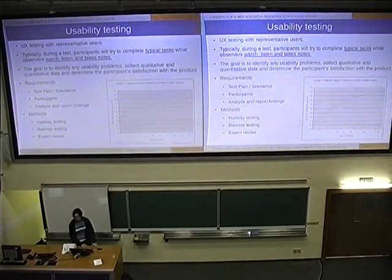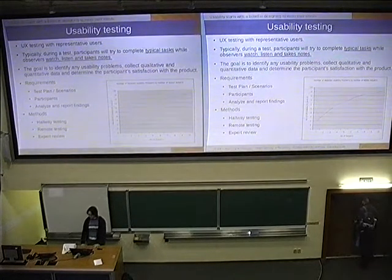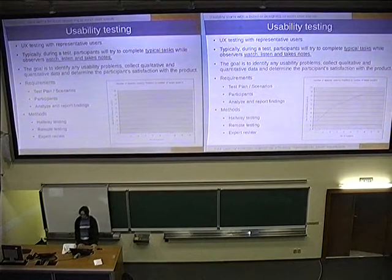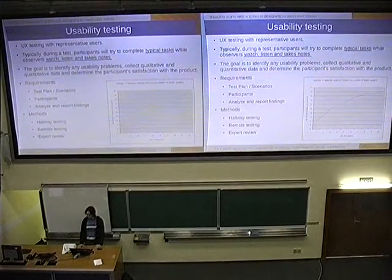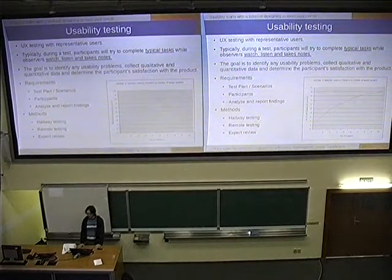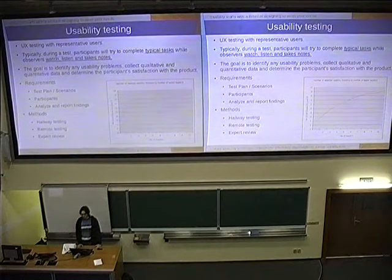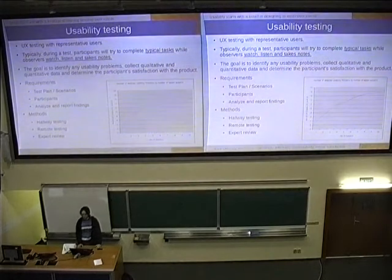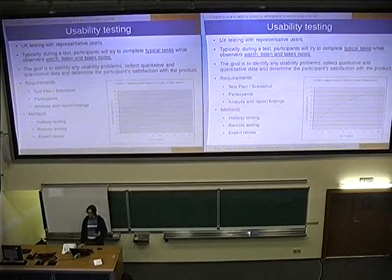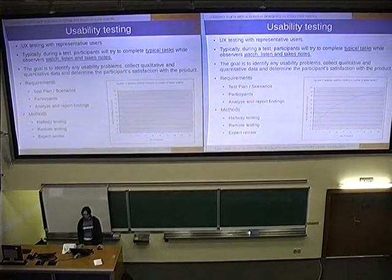There is a chart showing the success rate based on the number of participants. It's generally recommended to have at least four participants. A higher number of participants means more issues will be found, those issues will have better proof, and they can be prioritized correctly.